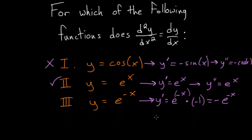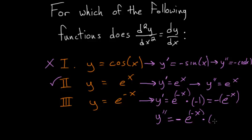Let's take its derivative again. The second derivative of e to the minus x: the derivative of e to whatever power is just equal to e to that exponent, the negative sign carries along as a constant, giving us e to the minus x, and we multiply by the derivative of the inside function, which is again minus 1. These negative signs cancel and we're left with e to the minus x. You can see that e to the minus x is not equal to minus e to the minus x, so the first and second derivatives aren't equal.